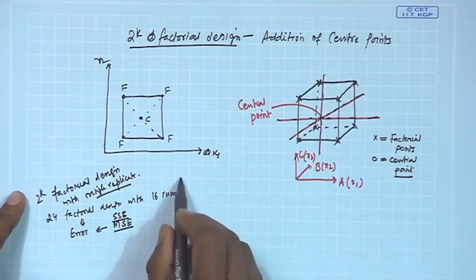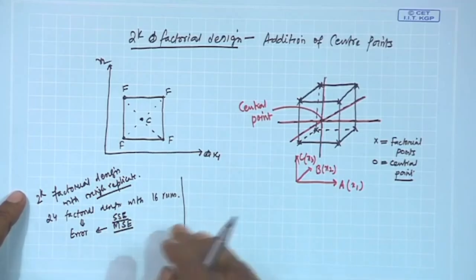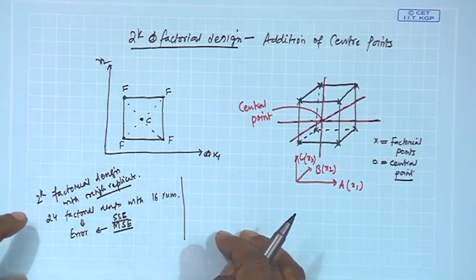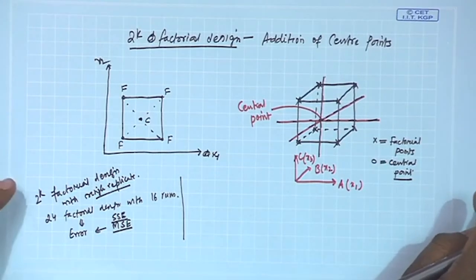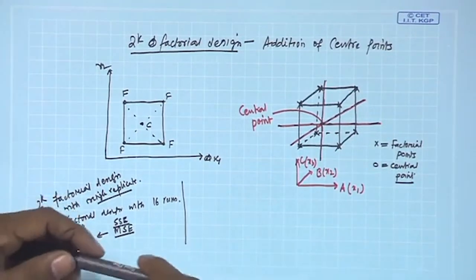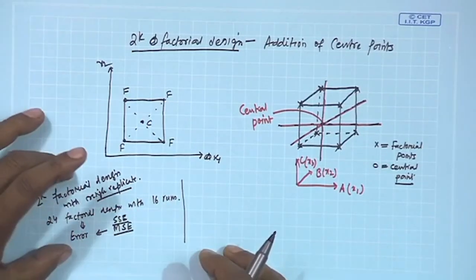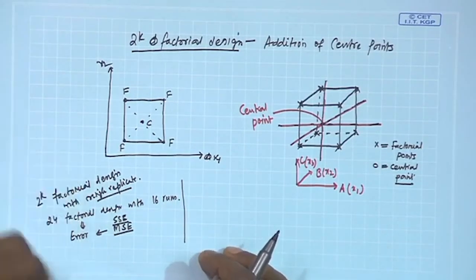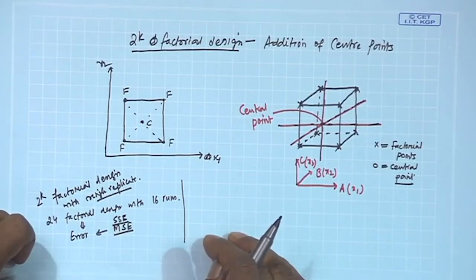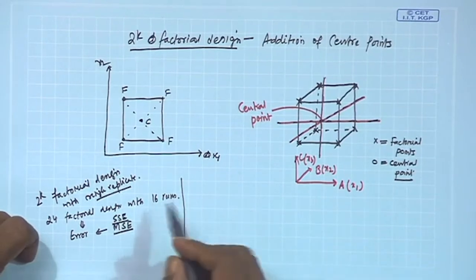We adopted a policy: estimate all effects and their contributions, find the percentage contributions, and discard those with low percentage contribution, primarily following the sparsity of effects principle — meaning higher-order interactions will have negligible effect. This error estimation problem can be sorted out by using a single replicate plus an additional experimental setting known as the center point.